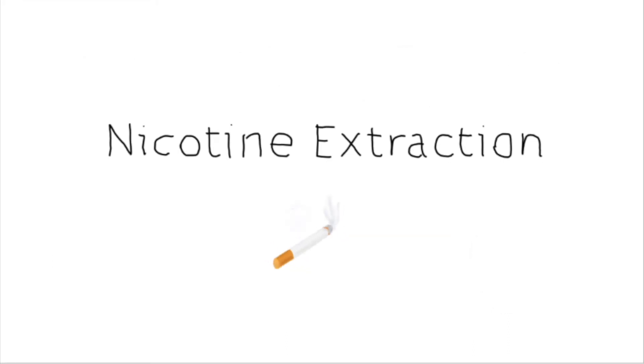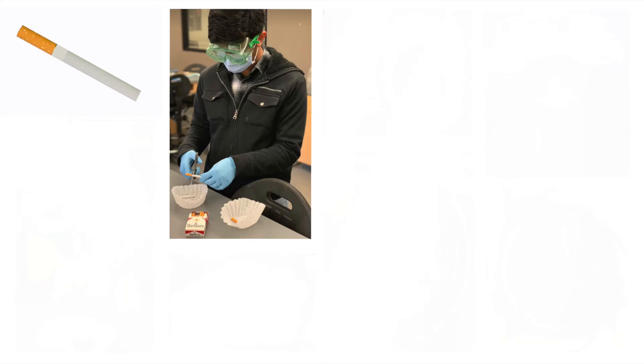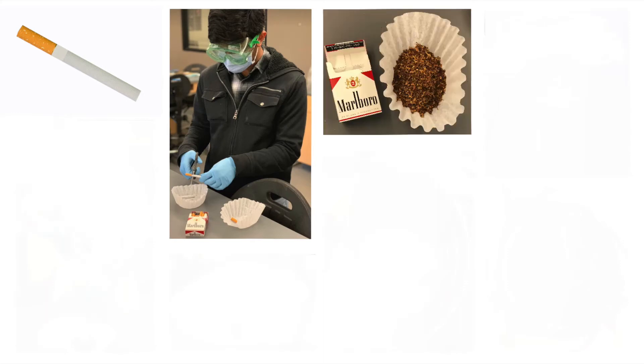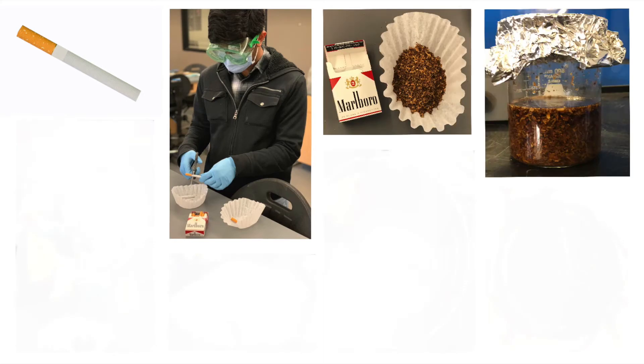To produce nicotine, cigarettes were used for a nicotine extraction procedure. After 14 grams of tobacco leaves were removed from a pack of 20 cigarettes, the tobacco leaves were added to a beaker. 300 milliliters of water were boiled and added to the beaker. The beaker was covered and allowed to rest for two hours.